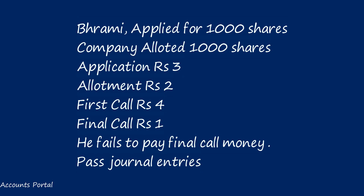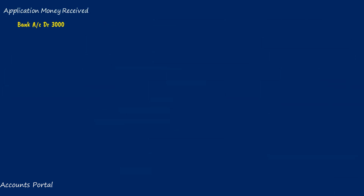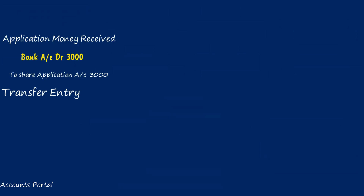Journal entry for application money received: Bank account debit — number of shares applied × application money per share = 1,000 × 3 = rupees 3,000. So Bank account Dr. 3,000 to Share Application account 3,000. Transfer entry on allotment: Share Application account Dr. 3,000 to Share Capital account 3,000.